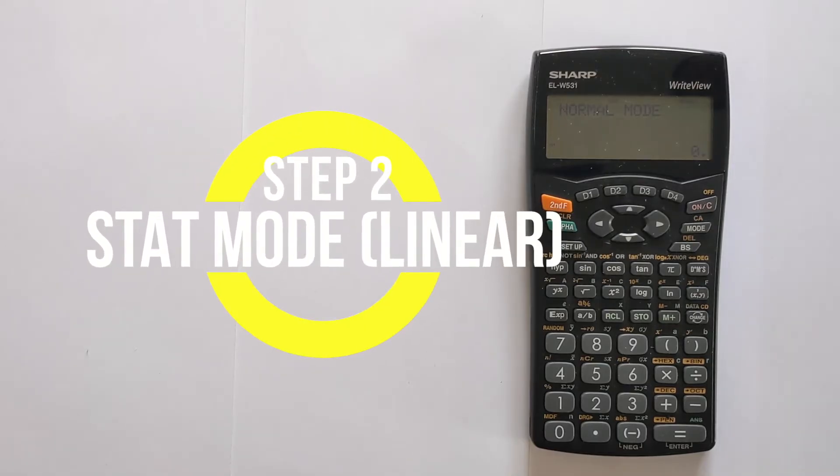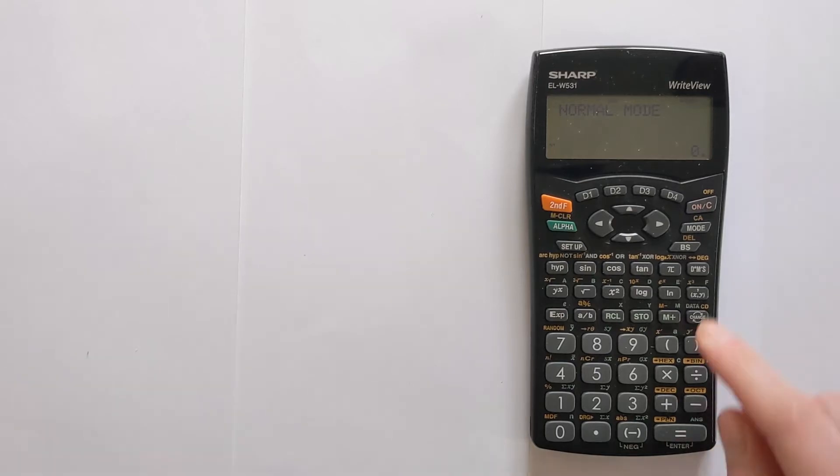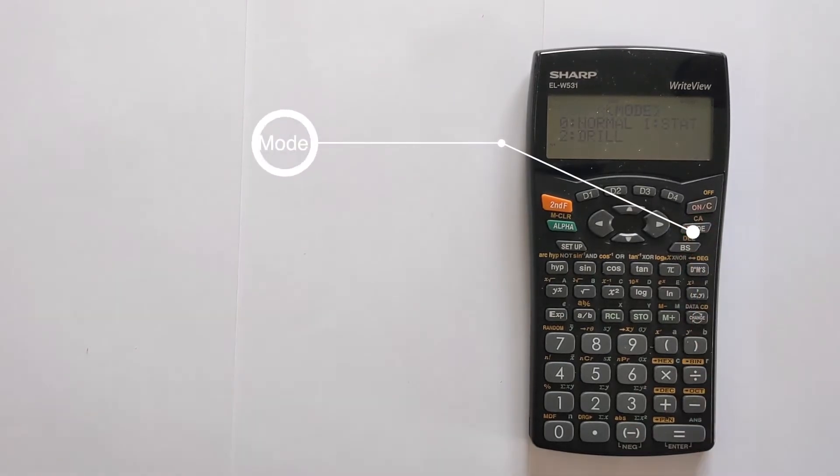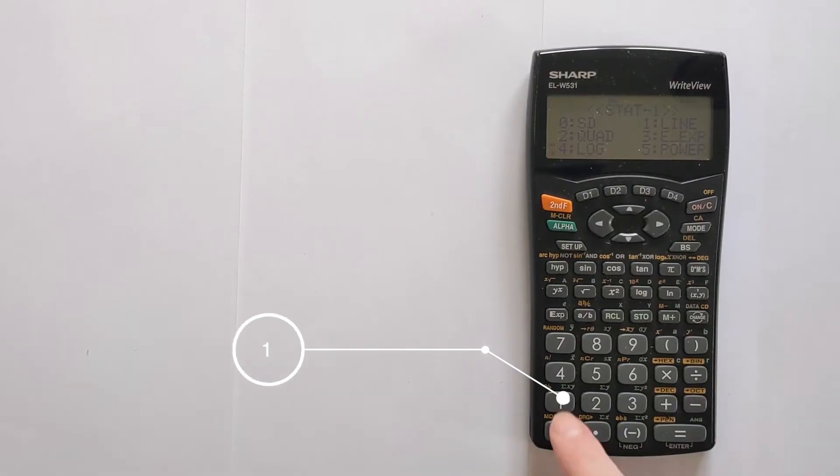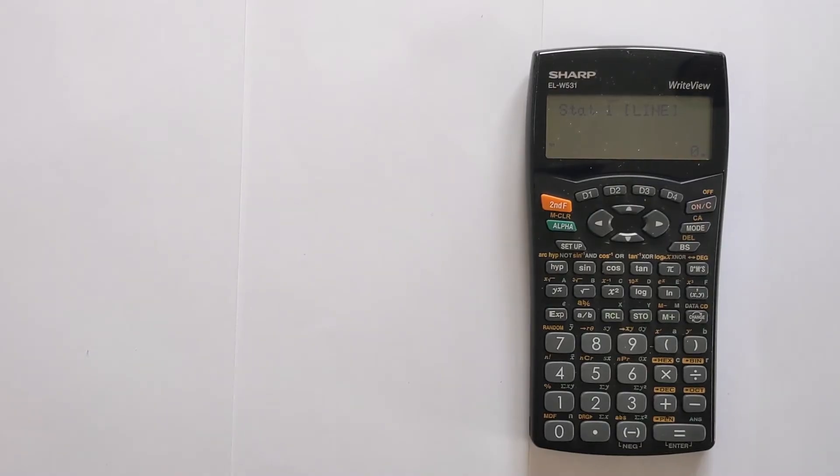The next step is you need to get into the correct statistics mode. To do that, you press mode, and then you press one, and then you press one. You're now in the correct mode for doing a Pearson's R calculation.